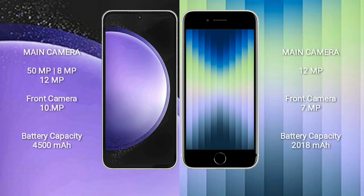Samsung Galaxy S23 FE has a triple rear camera setup: 50MP plus 8MP plus 12MP, and a 10MP front camera. iPhone AC comes with a single rear camera setup of 12MP and a 7MP front camera.